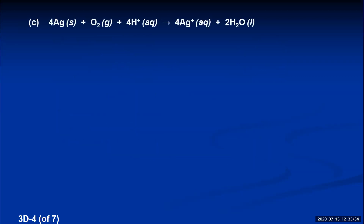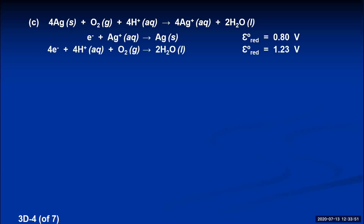Part C: the reaction of silver plus oxygen plus hydrogen ions yielding silver ions plus water was a little more challenging. You had to find a half reaction with silver and silver ions, which was easy, but the other half reaction needed oxygen and hydrogen ions on one side and water on the other. The silver reduction reaction had a potential of 0.80, and the one with hydrogen ions, oxygen, and water had a reduction potential of 1.23.